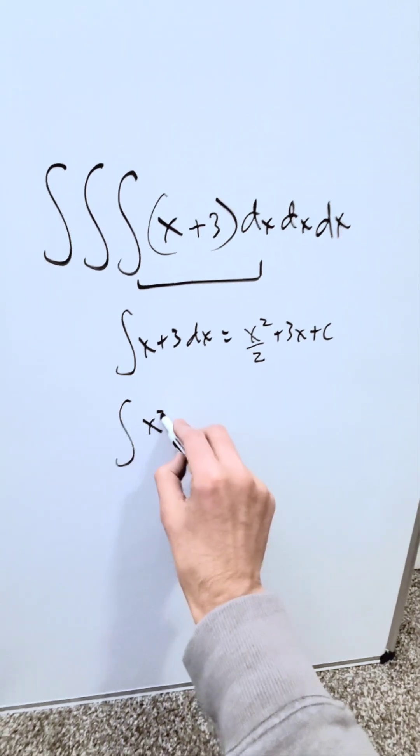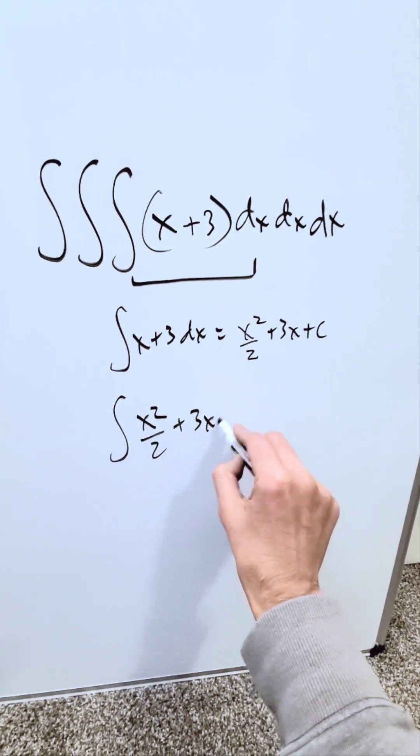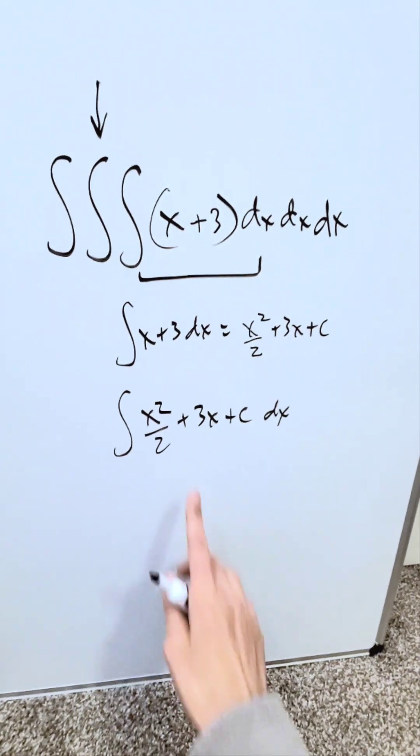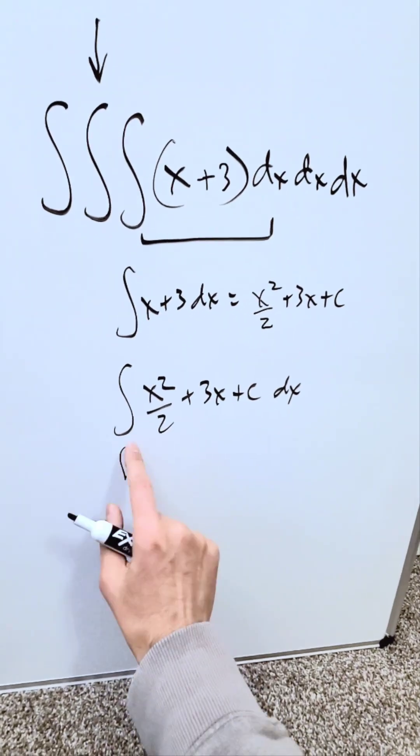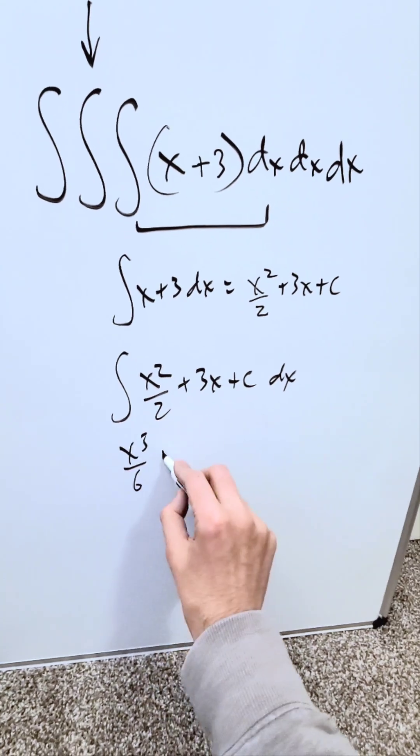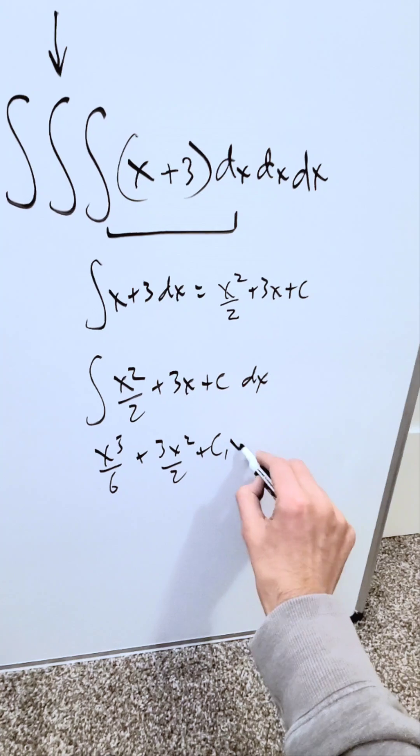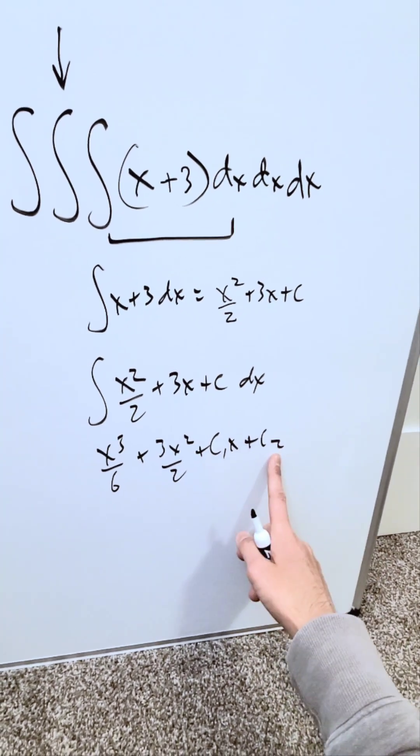This will become your integrand of your next integral, which will be exactly this. Now we're here at this second integral. I'll integrate this. What will it be? When you're integrating it, you'll have x cubed over 6 plus 3x squared over 2 plus c1x plus another constant.